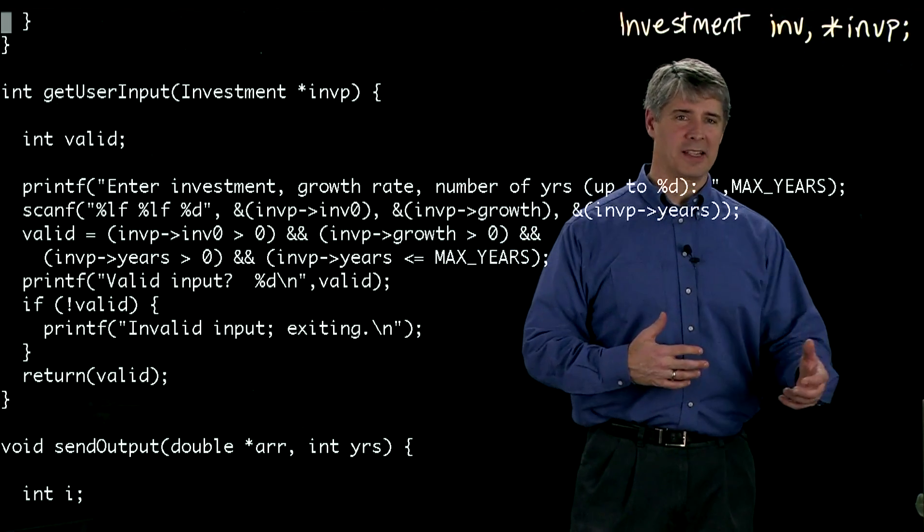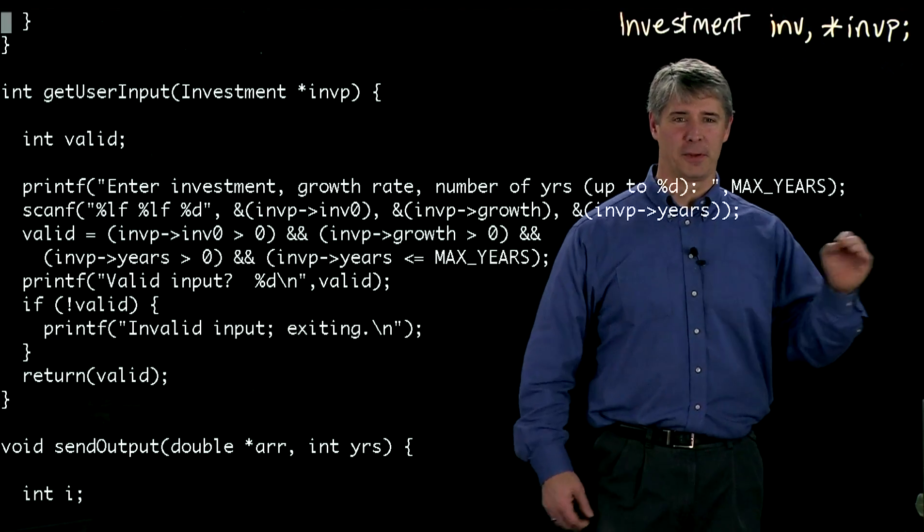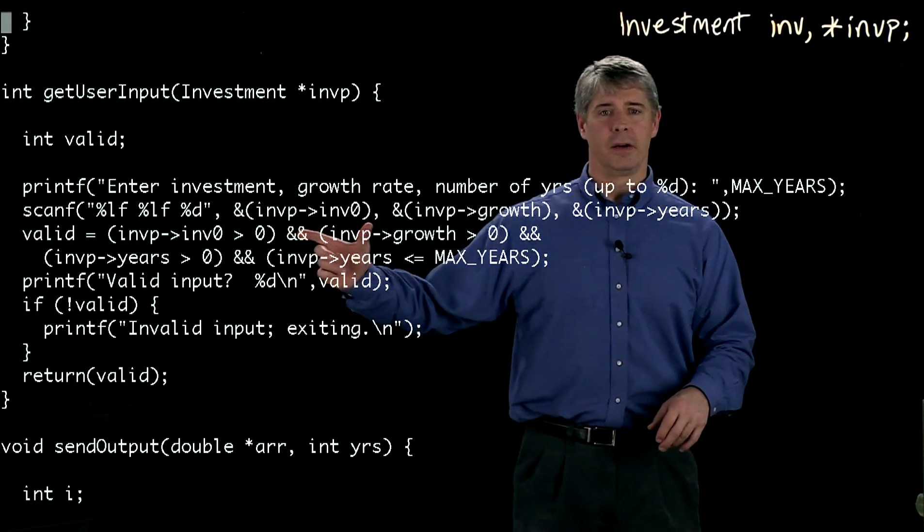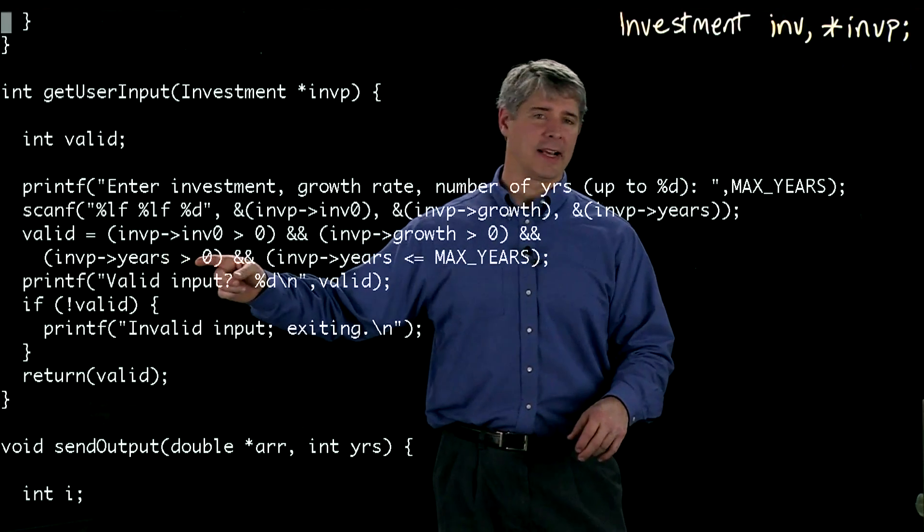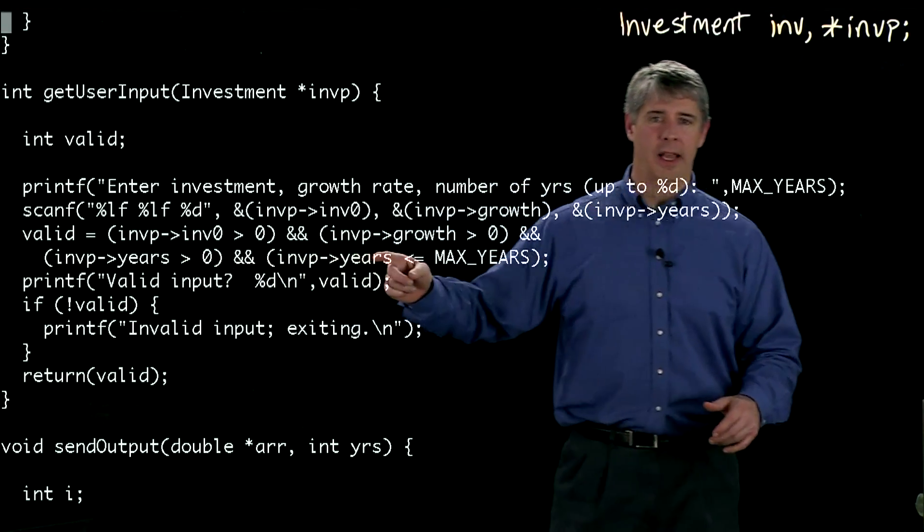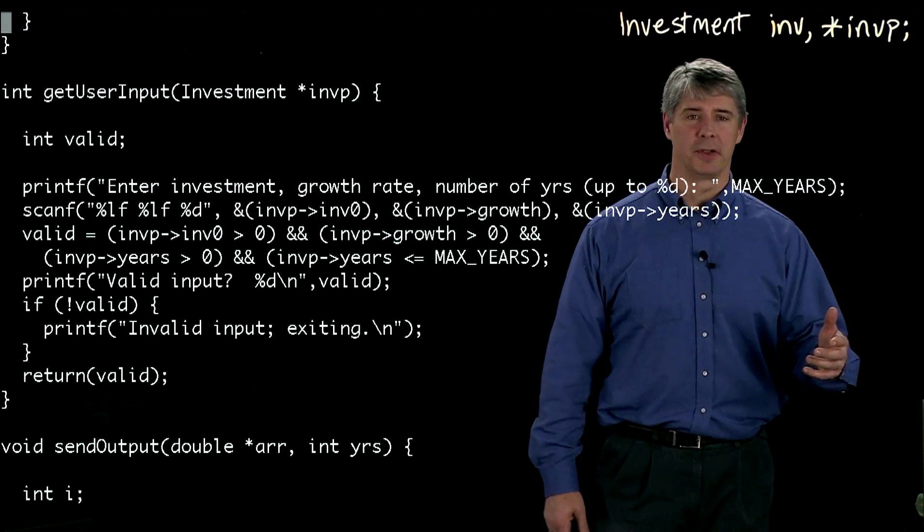And greater than, if it was less than zero, I don't even know what that would mean. Negative growth is a value between zero and one. So the growth has to be greater than zero. The number of years you're tracking has to be greater than zero. And the number of years you're tracking also has to be less than or equal to the maximum number of years.